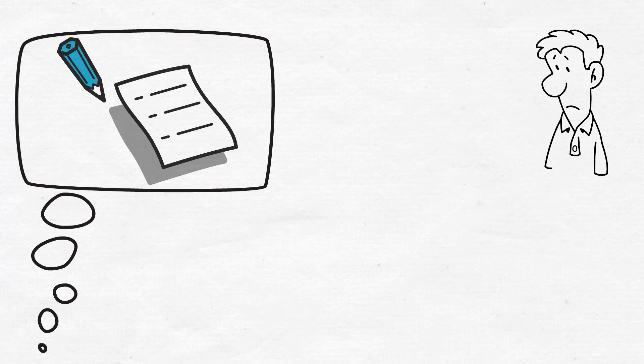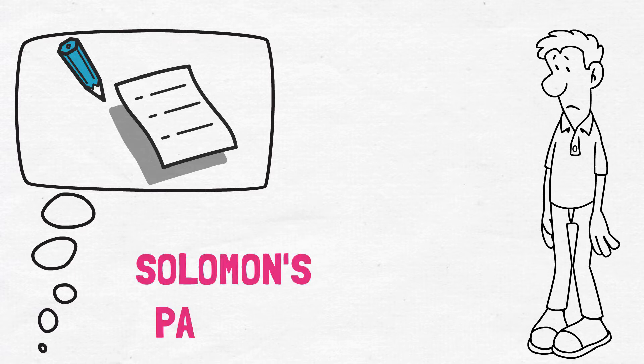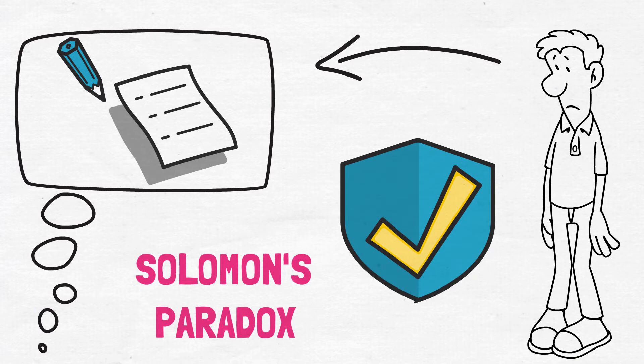Now, how about you treat your own troubles from a third-party perspective? This self-distancing technique is known as Solomon's Paradox, where you eliminate all biases and address your own problems more rationally as you do for others. You can practice this psychological trick to solve your problems more efficiently.